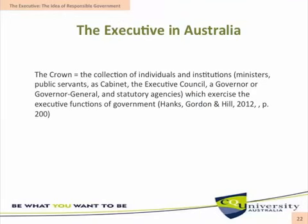The executive, or the Crown, may also be defined as the collection of individuals and institutions such as ministers, public servants, the cabinet, the Executive Council, a Governor or Governor-General, and statutory agencies which exercise the executive functions of government. But this idea of the Crown or the executive being a collection or a body of individuals and institutions exercising the executive parts of government raises a thorny issue.